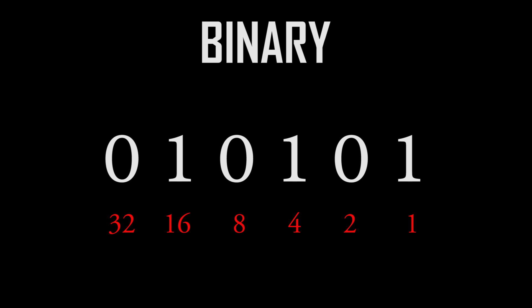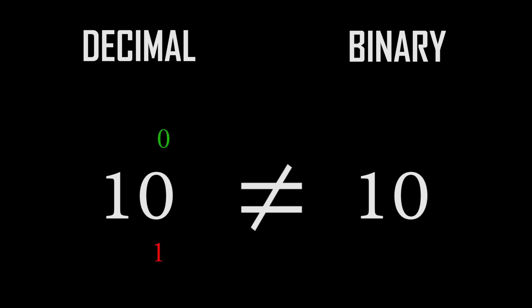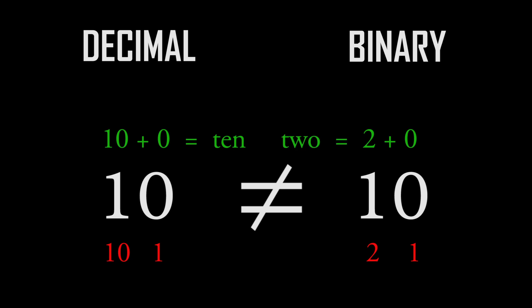Here's zero one zero one zero one — how would you do this? You add up where there's a one. A one in the ones place equals one, plus a one in the fours place equals four, plus a one in the sixteens place equals sixteen. So one plus four plus sixteen equals twenty-one. You just add up the number of that digit if there's a one, and don't add it up if there's a zero — that's how you add binary. When you count past one in binary form, you go to the next digit. One zero in binary is not the same as one zero in decimal. In decimal, one zero means a zero in the ones place plus a one in the tens place equals ten. In binary, one zero means a zero in the ones place plus a one in the twos place equals two. That's the basic system of binary.